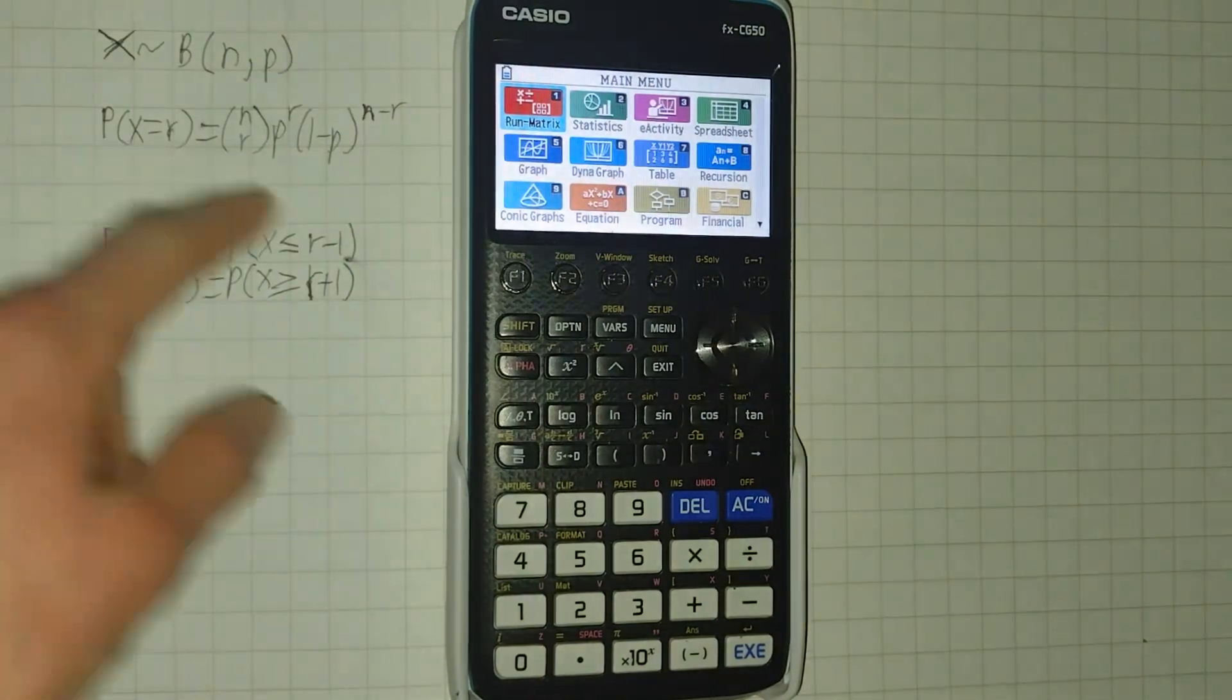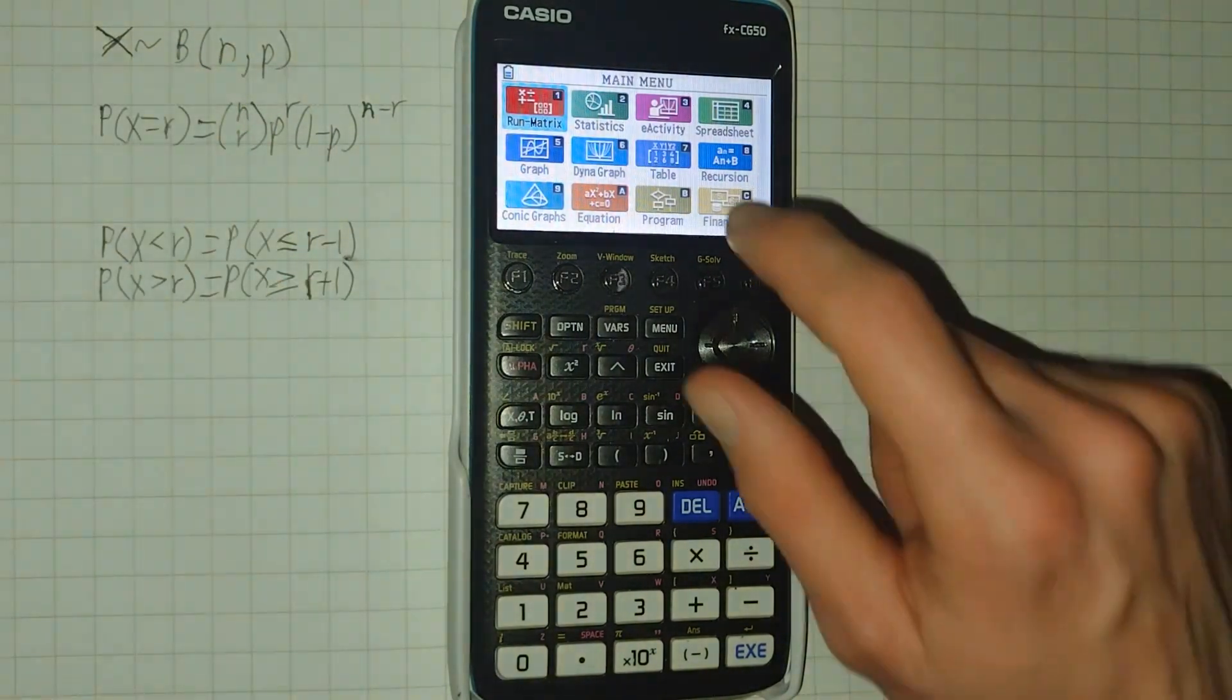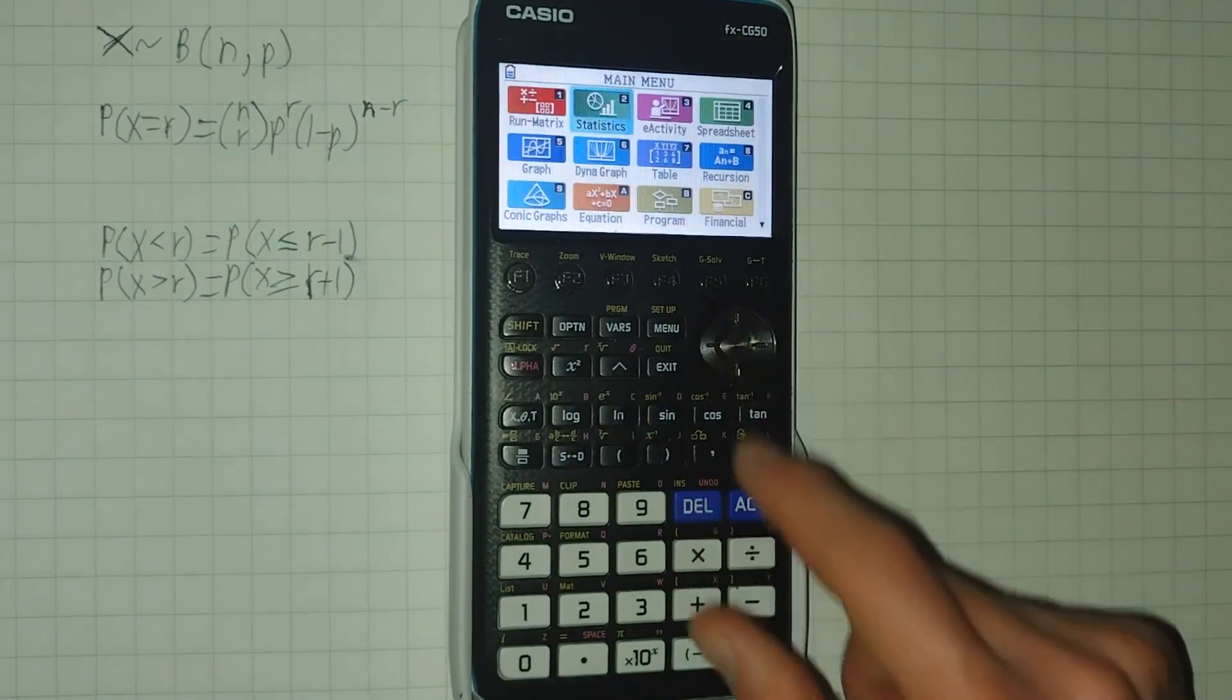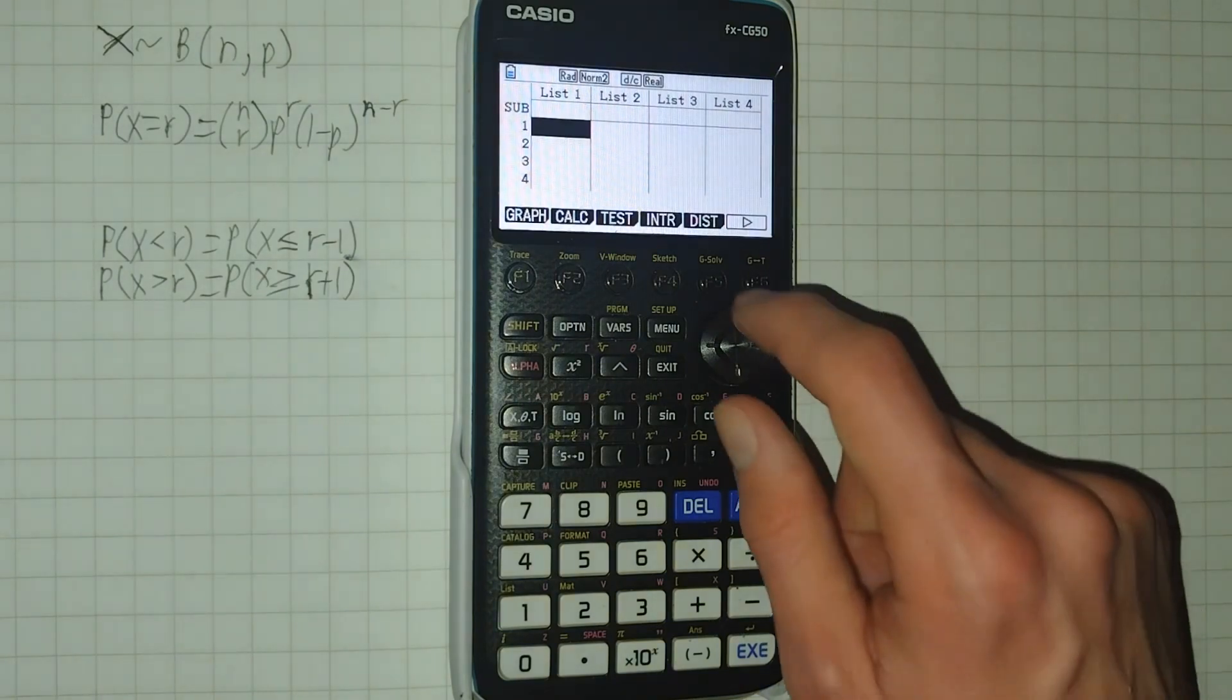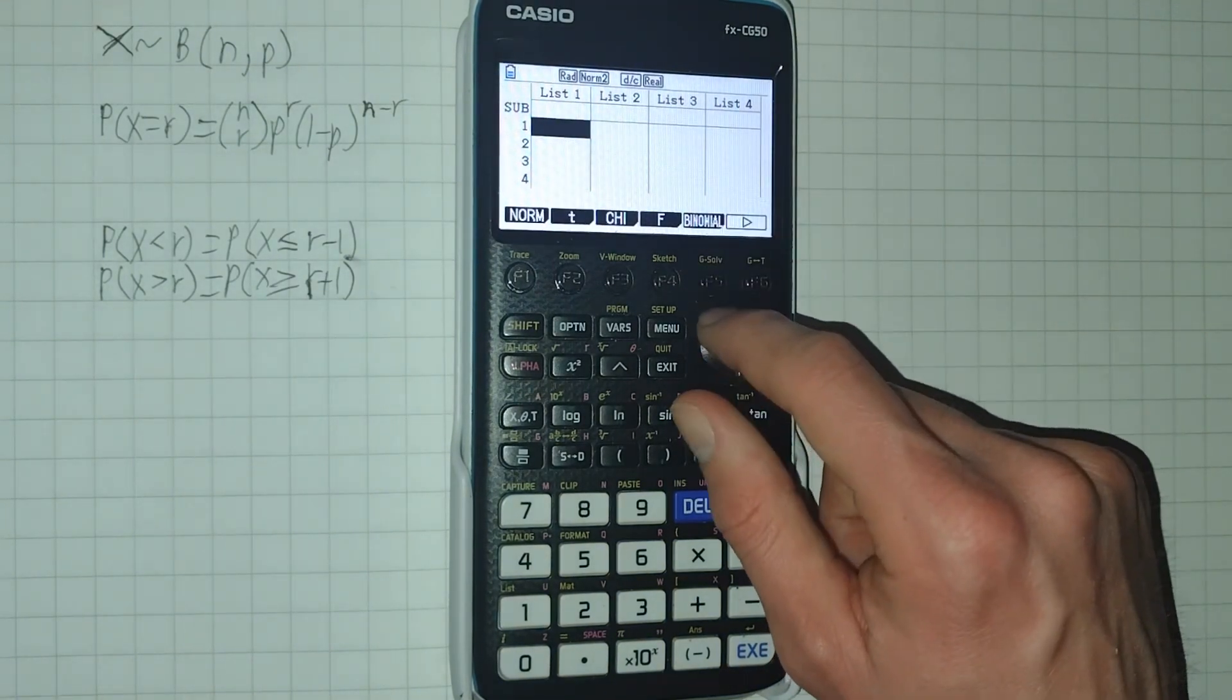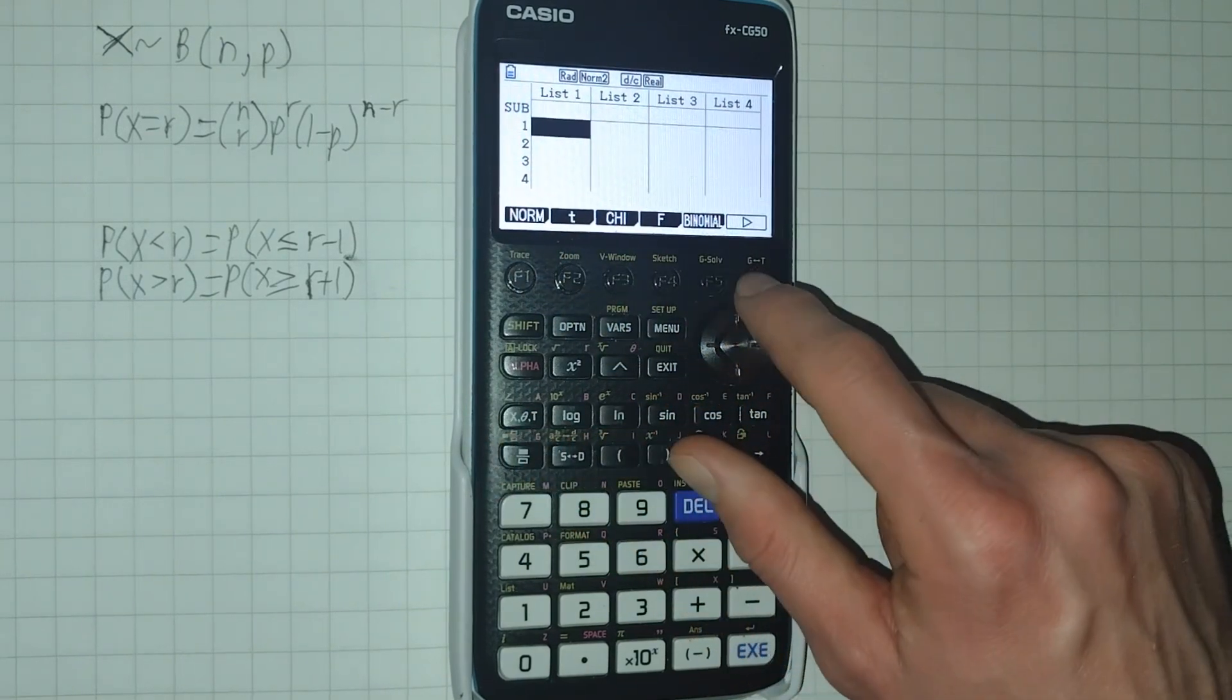So that's how you calculate that probability, but that's a bit long to type in manually, so you can use your CG50 to calculate it automatically. We're going to go into statistics mode, number 2, and then we can click F5 for dist distribution. We're then going to click F5 again for binomial. You'll see there are other distributions here and more on this page, but we're going to click F5 for binomial.